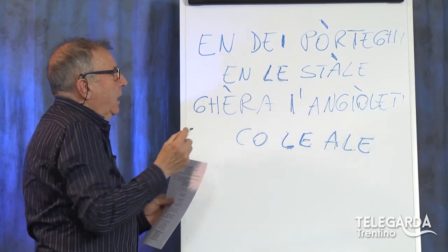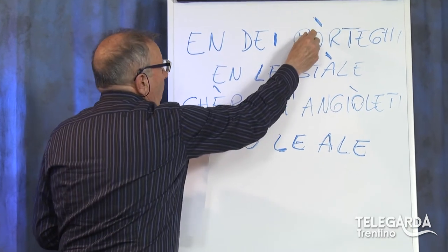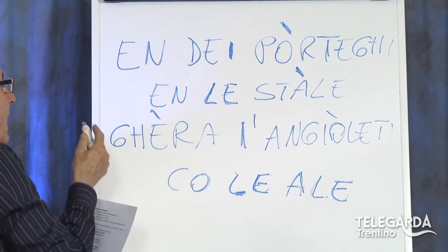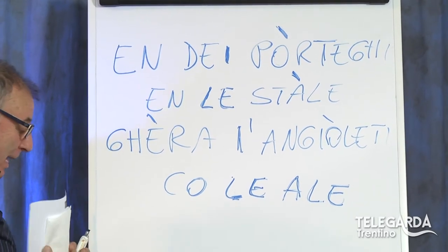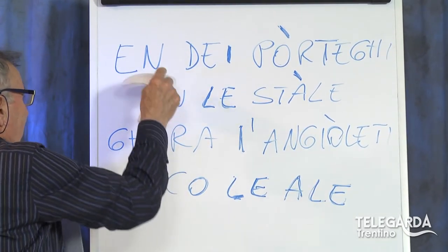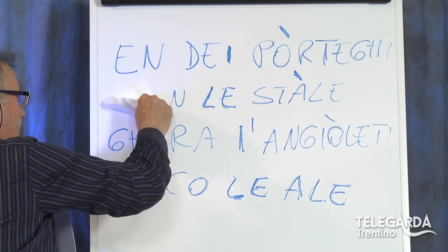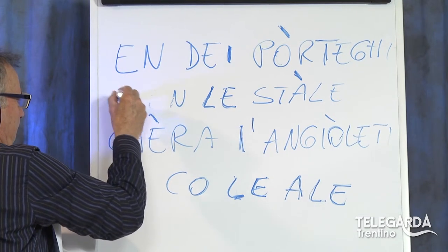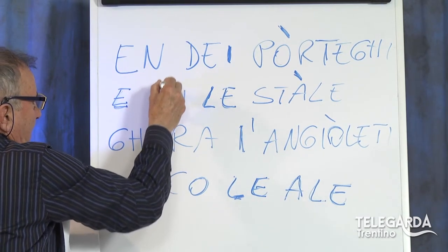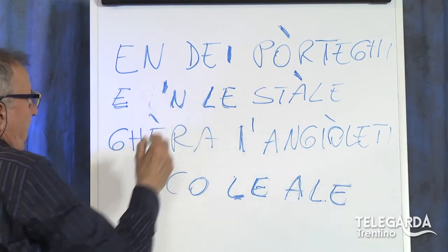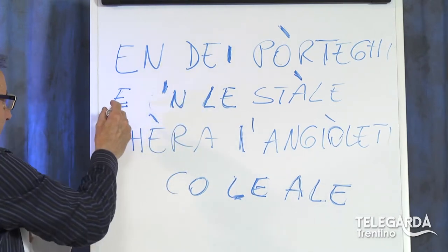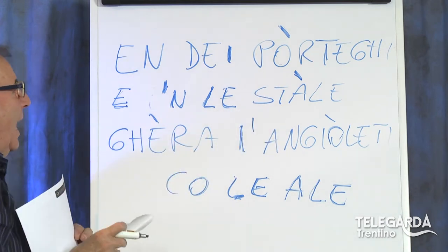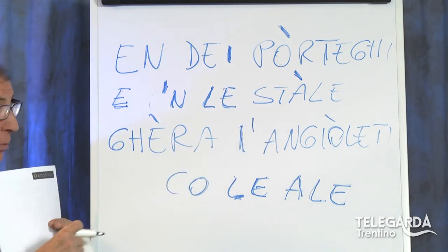'En dei porteghi' - devo dire che qui siamo a posto, ha messo una bella O aperta. 'En dei porteghi, porteghi.' Ma 'en lestale' - non sta, sta per 'e en lestale'. Quindi questa E va staccata, 'en lestale', ma ci va l'apostrofo. Quindi vedete: 'en dei porteghi, e 'n lestale.' Ecco. E poi trovo questo accento sulla A.